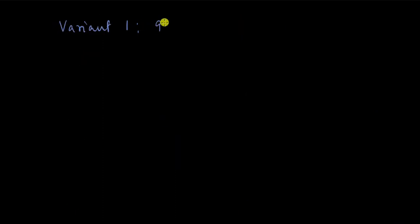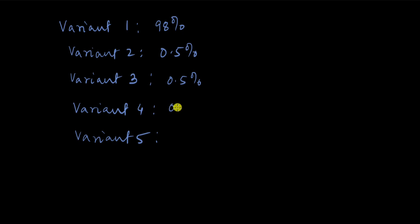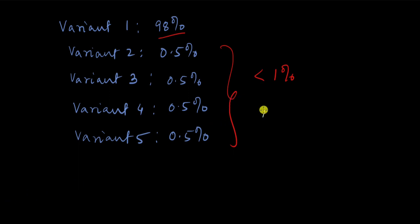Let's take another example. Say we have five variants: variant one is present in 98% of the population; variant two in 0.5%; and variants three, four, and five are each present in 0.5% of the population. Here we do not have a DNA polymorphism, because only variant one exceeds one percent. All the remaining variants are present in less than one percent of the population.